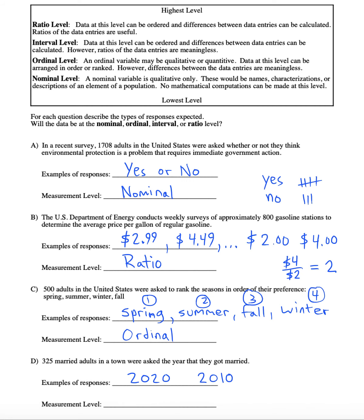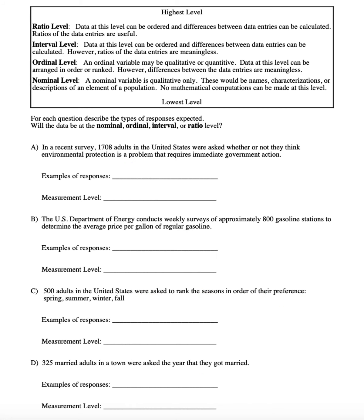When we get to the interval level, data there can be ordered and the differences between data entries has meaning. But even at this level, ratios of the data entries are meaningless. The highest level of all will be the ratio level, and this is the level at which many scientific quantities are measured. Data at this level can be ordered, differences between the entries have meaning, and even ratios of the data entries have meaning as well.